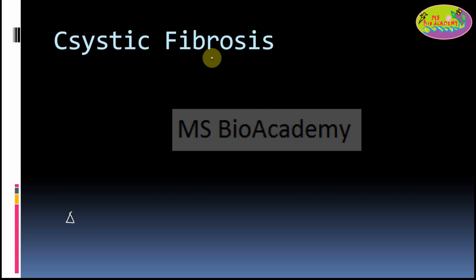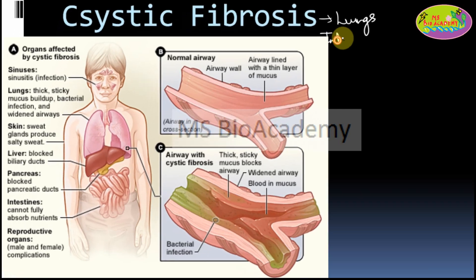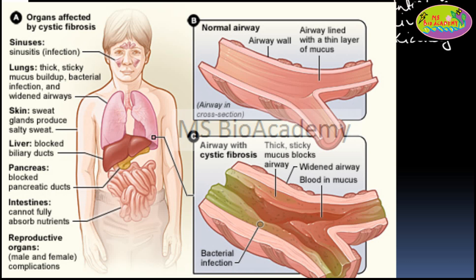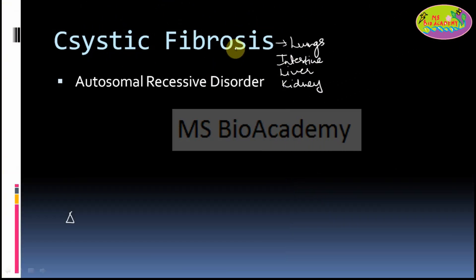Cystic fibrosis is basically an autosomal recessive disorder. It is mainly a disease or disorder which occurs in the lungs, and also affects the liver and kidney. The epithelial lining of these organs is getting affected by means of cystic fibrosis.